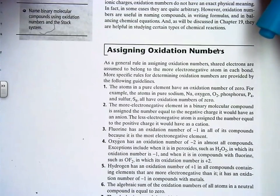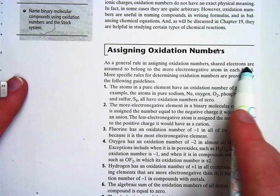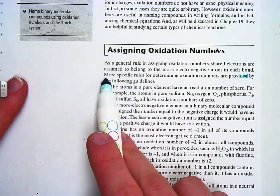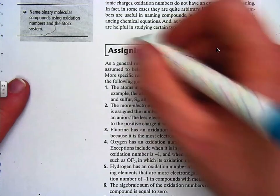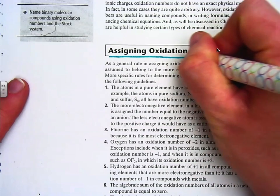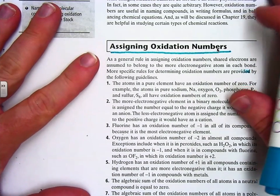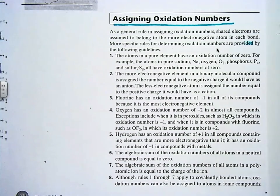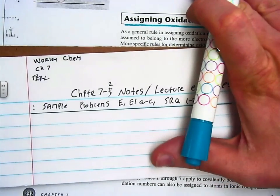Assigning oxidation numbers. As a general rule in assigning oxidation numbers, shared electrons are assumed to belong to the more electronegative atom in each compound. More specific rules for determining the oxidation number are provided by the following guidelines. In your notes, you're going to be writing the rules for oxidation numbers — this is important. I want you to write them down. We're going to write down the basic rules so we can know how to write oxidation numbers. Take out a piece of paper if you haven't already, head it like this, so that you'll be ready to write notes.